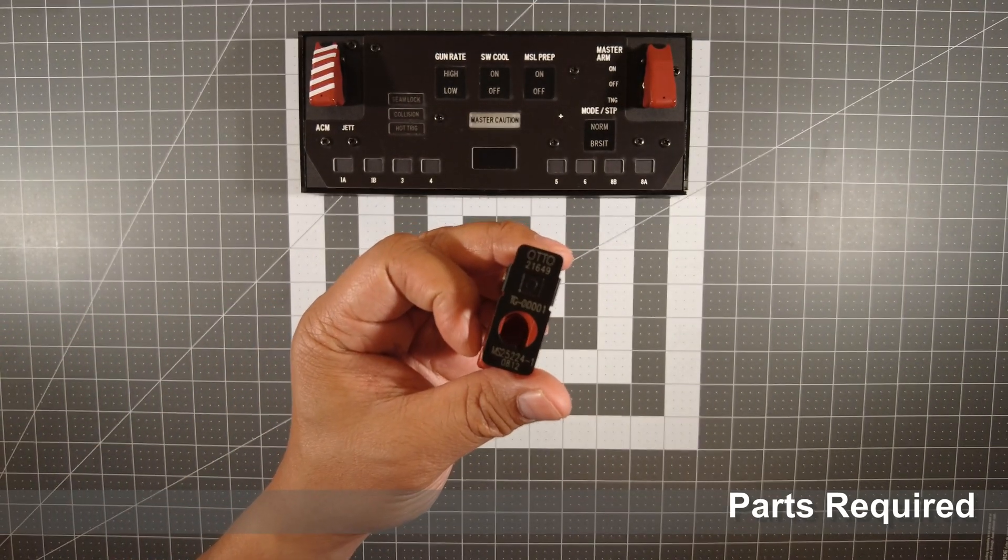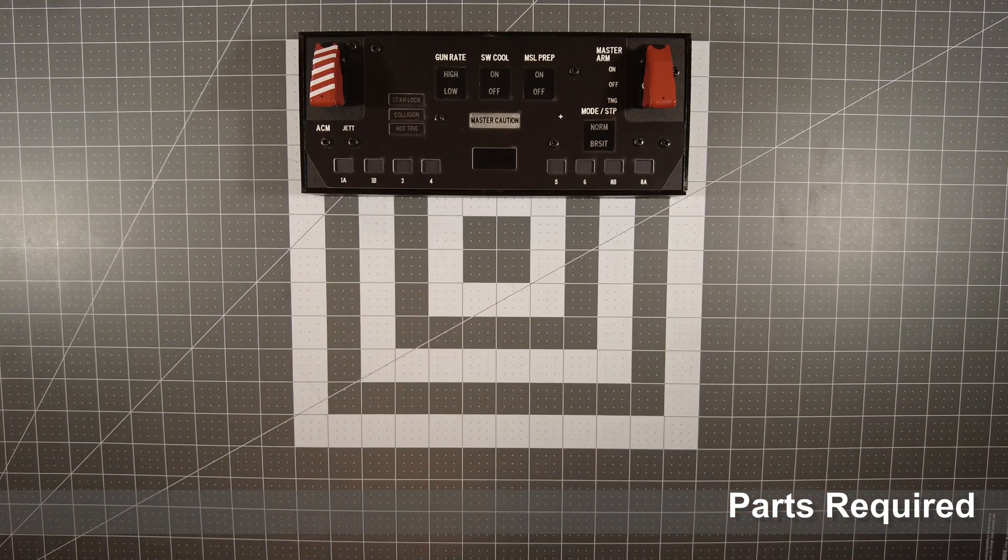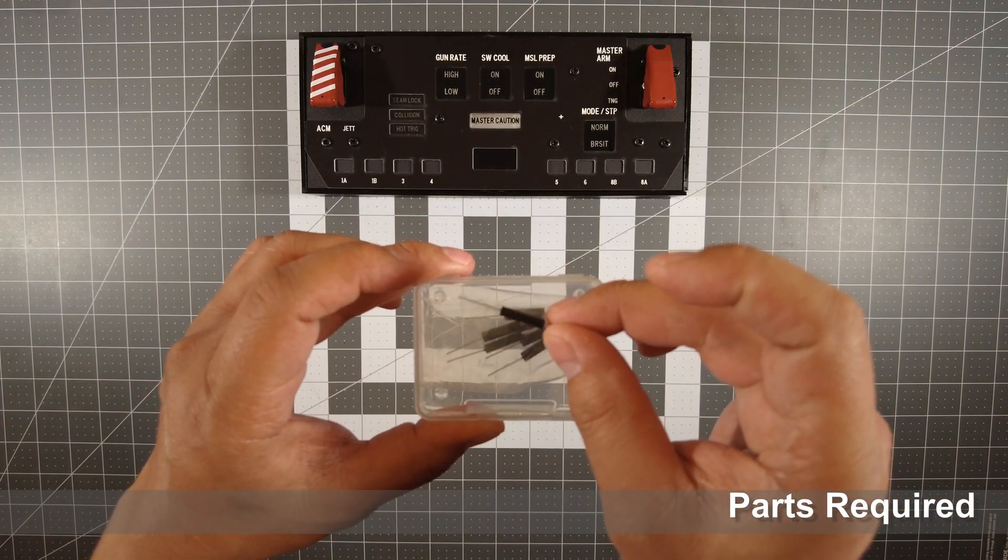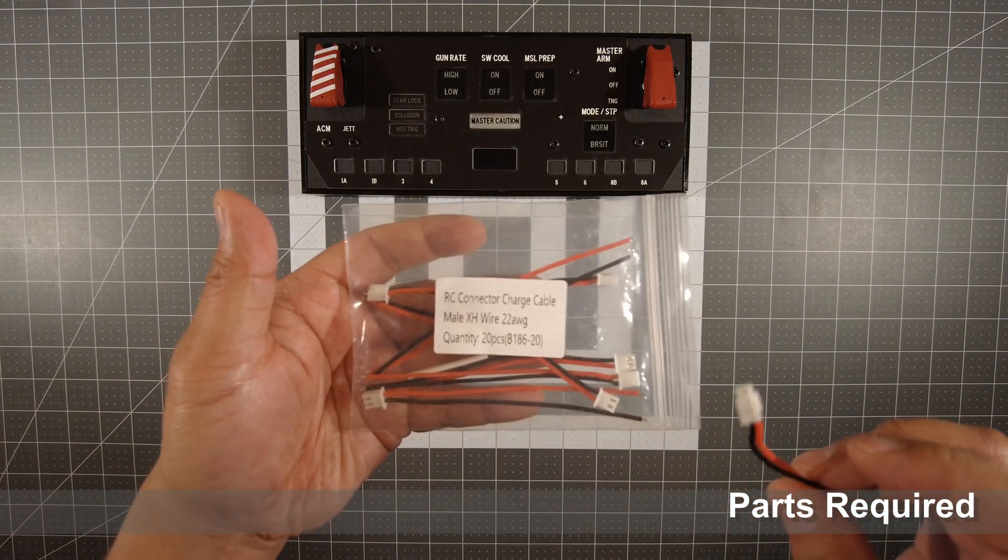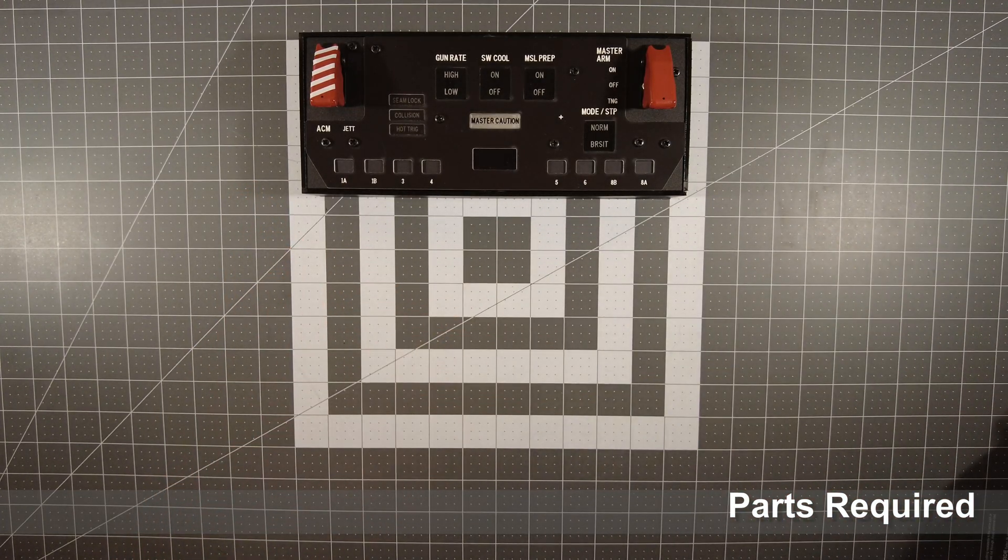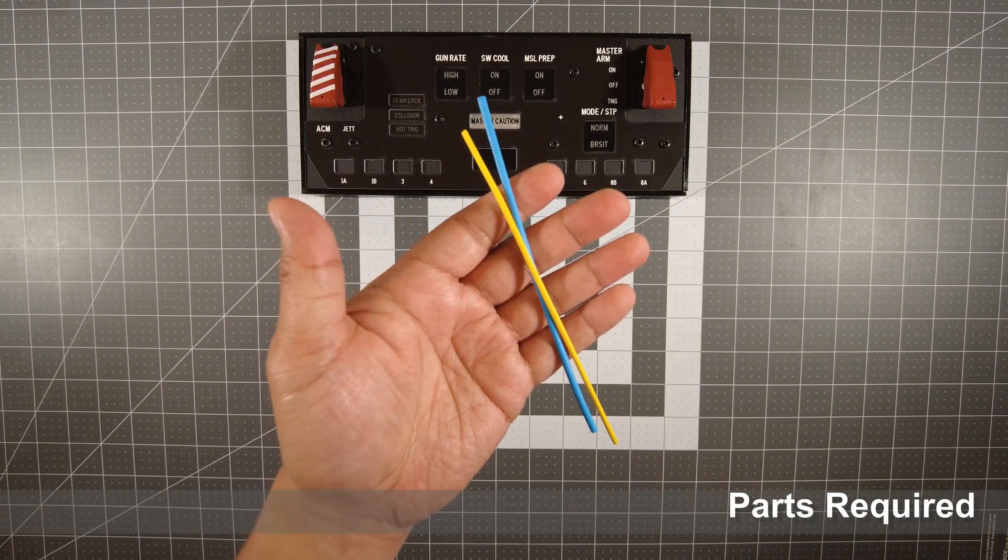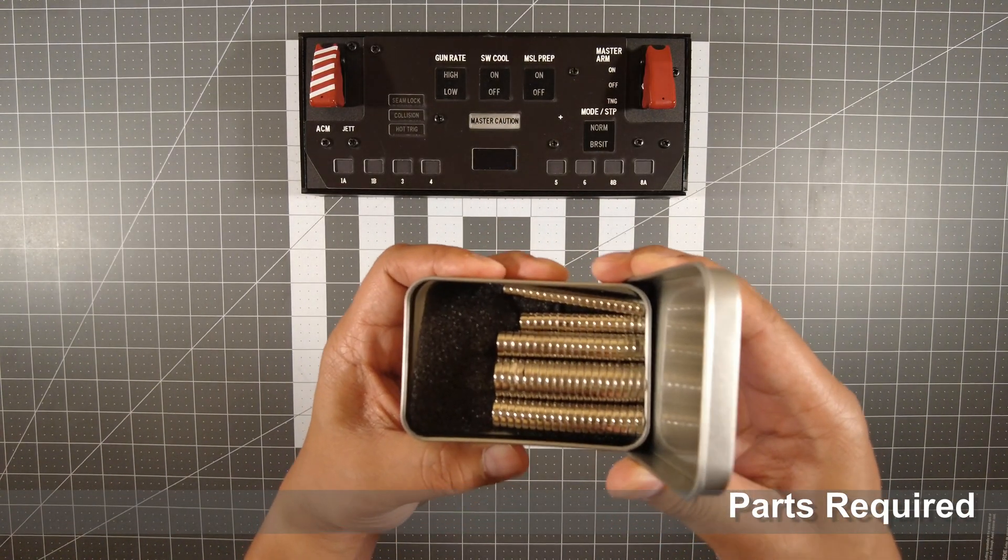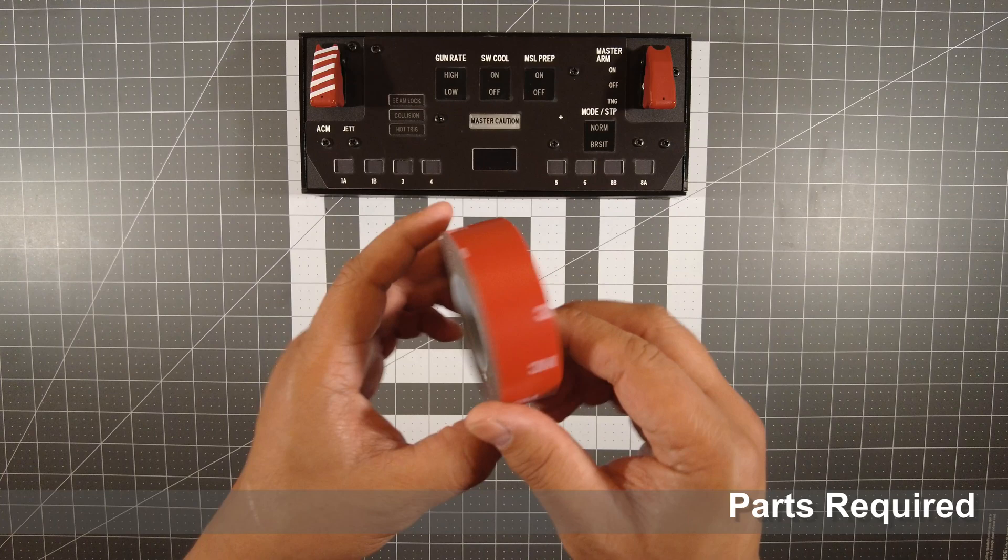You'll need a switch guard - you can buy these or have yours 3D printed to make it look like the F-14. Reed switch, normally open. JSD connectors with cable, male. Shrink wrap. Assorted magnets. 3M mounting tape.